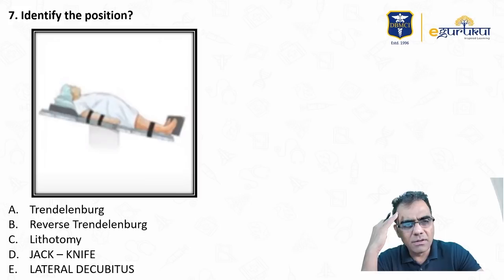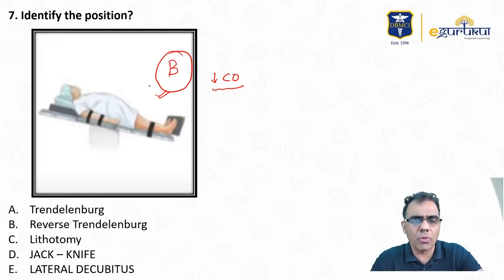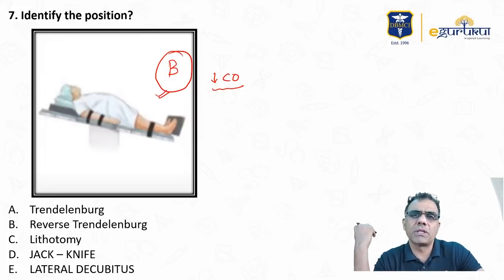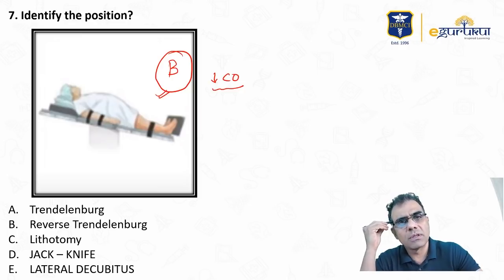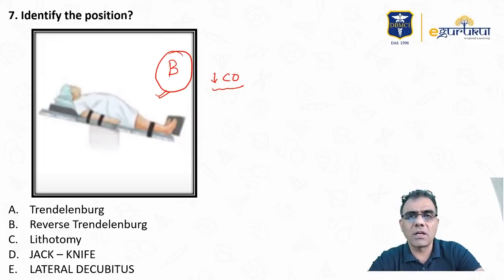Identify the position. That is very simple. Trendelenburg, reverse Trendelenburg, lithotomy, jackknife, lateral decubitus. Obviously Trendelenburg is head low, so reverse Trendelenburg is head up. From anesthesia point of view, the biggest complication of this position is decreased cardiac output, hypotension. Why? Head up position will decrease the venous return, so decreased venous return leading to decreased cardiac output and hypotension. That is the most major problem of reverse Trendelenburg. This reverse Trendelenburg is most often applied in laparoscopic surgeries. Laparoscopy itself increases the risk of hypotension by increasing intra-abdominal pressure and compressing inferior vena cava. And reverse Trendelenburg further increases this hypotension by decreasing the cardiac output. So during reverse Trendelenburg for laparoscopic surgeries, we have to be very cautious about blood pressure.